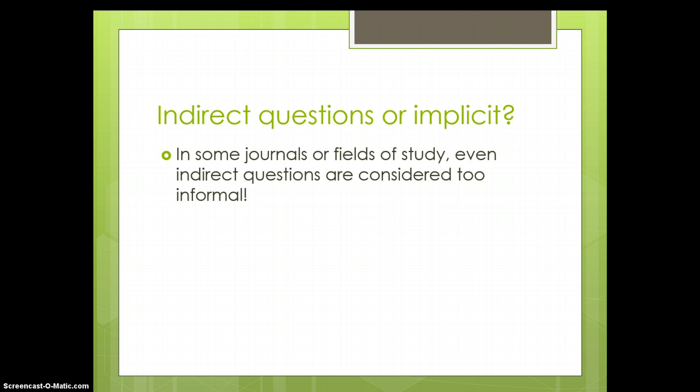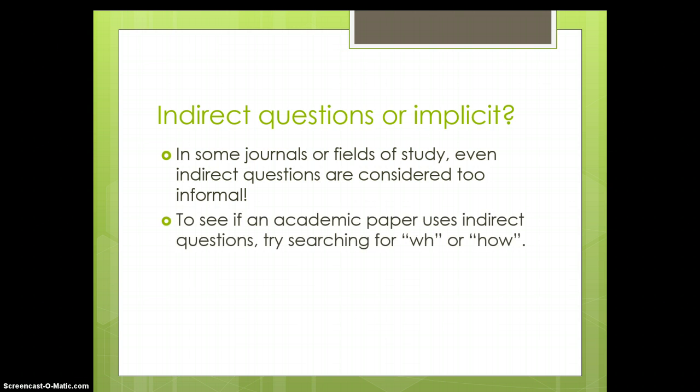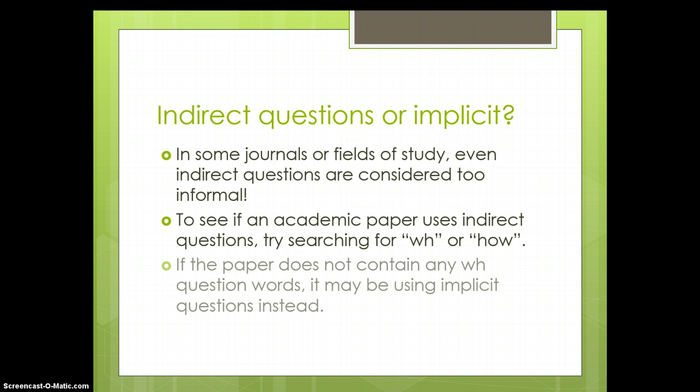So how do you know if you're dealing with this kind of writing style? Well, do a search in one of these papers for W-H, or perhaps the word how. And you'll find a lot of things that are not question words, words that just happen to contain W-H. You probably get some relative pronouns like who and which. But look and see if anything there is a question word. And if not, it's probably using implicit questions instead.